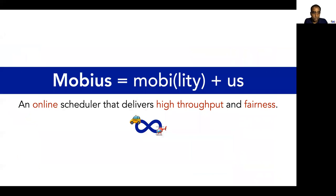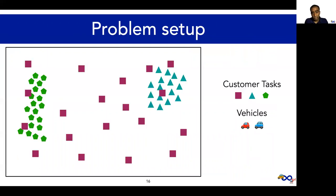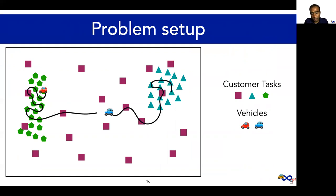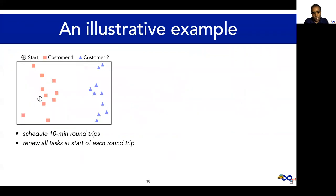So to solve these challenges, we introduce Mobius, an online scheduler that provides provably good throughput and fairness. We have a bunch of tasks from different customers and a fleet of vehicles. Our goal is to plan routes for each vehicle for some horizon into the future, say 30 minutes. And then we execute those routes for some time, say 10 minutes. In these 10 minutes, some new tasks may have arrived, so it's time to re-plan again. We repeat this process, incorporating new tasks and re-planning at regular intervals.